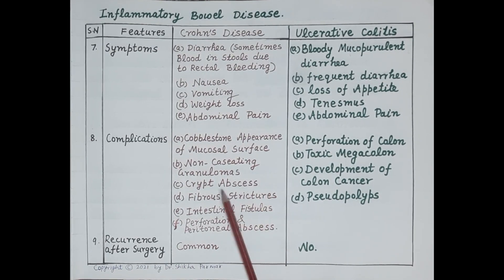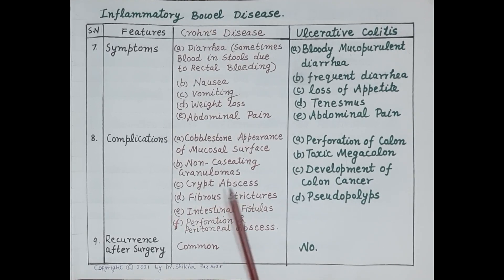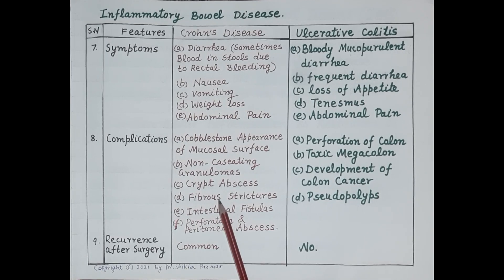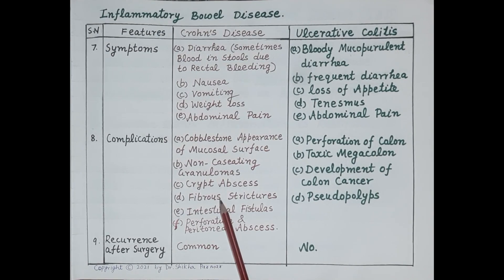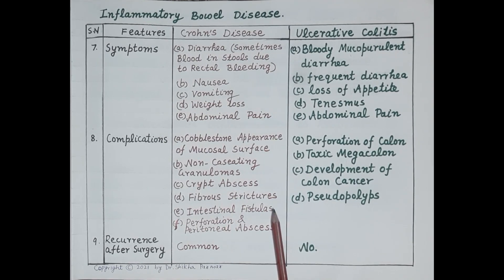Another complication of Crohn's disease is crypt abscess. Crypts are glands found in the intestinal epithelial lining; chronic inflammation leads to accumulation of neutrophils in the crypts, which destroy them, resulting in crypt abscesses. Fibrous strictures are also a complication — cycles of inflammation followed by healing produce fibrous scar tissue. This scar tissue narrows the lumen of the intestine and is a major complication of Crohn's disease.